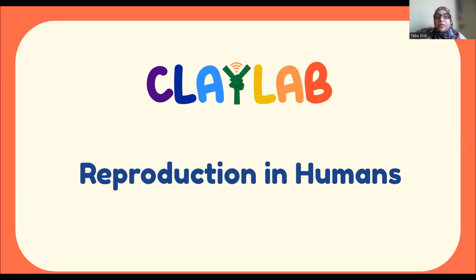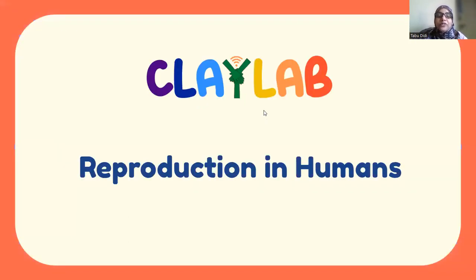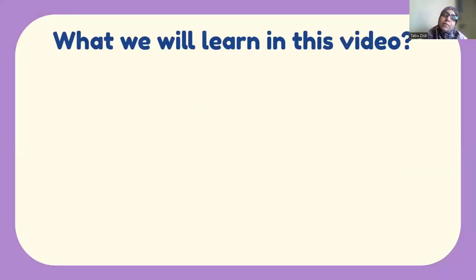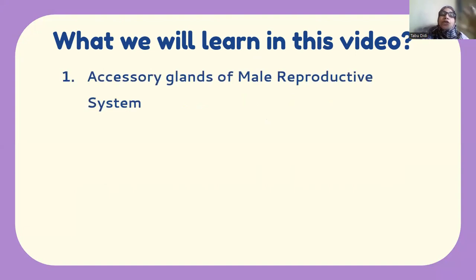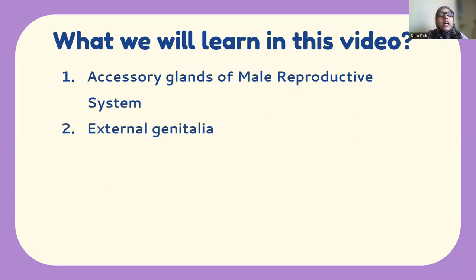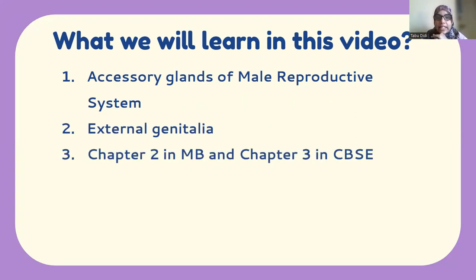Welcome to another video on reproduction in humans. In the first video we covered the human male reproductive system, prior to that the introductory part covered asexual reproduction in sponges and hydra. We began with the human male reproductive system where we covered the TS of testes. In this video we are going to discuss the other parts — the accessory glands.